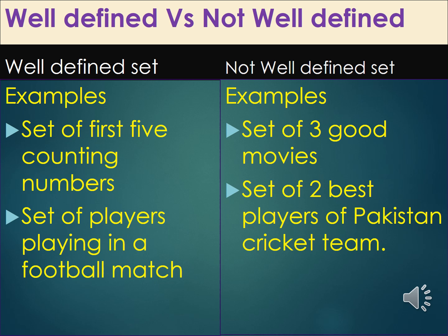Now look at some other examples of well-defined sets. The set of the first 5 counting numbers — 1, 2, 3, 4, 5 — these numbers could never change. Also, the set of players playing in a football match: there are 22 players in a football match and they do not change until the match is over.